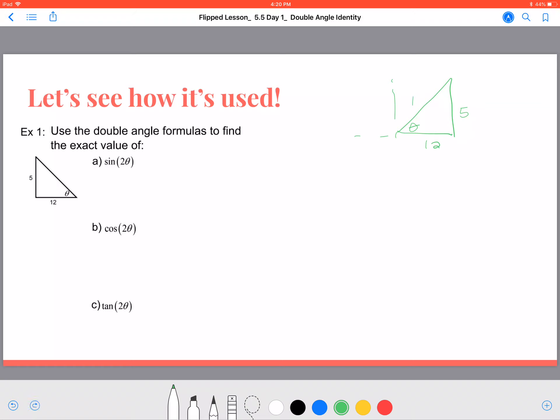We know this is a special right triangle and the hypotenuse is 13. I'm going to go ahead and draw that in. So if I want to find the sine of 2 times whatever theta is, we can apply the property. We know that the sine of 2θ is equal to 2 times the sine of θ times the cosine of θ.